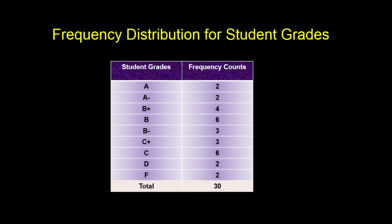So these numbers — 2, 2, 4, 6, 3, and so on — are called frequency counts, and this type of data is often referred to as count data.